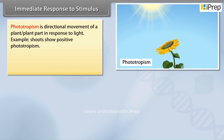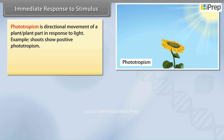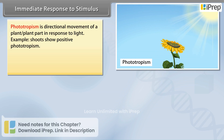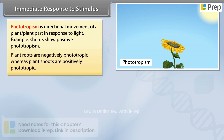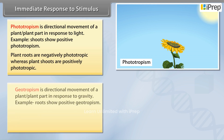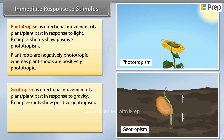Phototropism is the directional movement of a plant part in response to light. For example, shoots show positive phototropism. Plant roots are negatively phototropic, whereas plant shoots are positively phototropic.